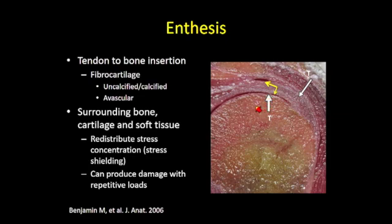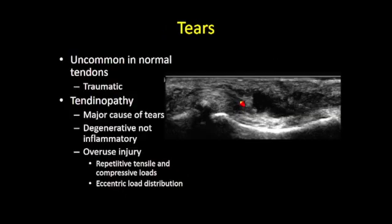Stress shielding can be productive to some extent, but it can also produce tendon damage through continuous repetitive loads. Tendons are very strong structures, so it is extremely uncommon to have a rupture of an otherwise normal tendon — we see it occasionally in traumatic incidents, but it's very rare. We generally see tendon tears in the setting of tendinopathy, as opposed to tendonitis, which is more of a misnomer. Tendinopathy is a degenerative rather than inflammatory phenomenon, typically seen with overuse injury due to repetitive tensile, compressive, and eccentric loads.